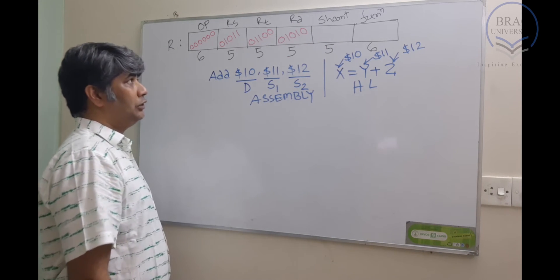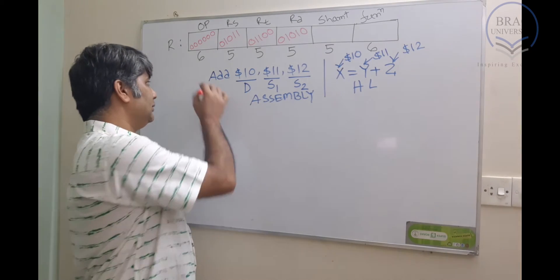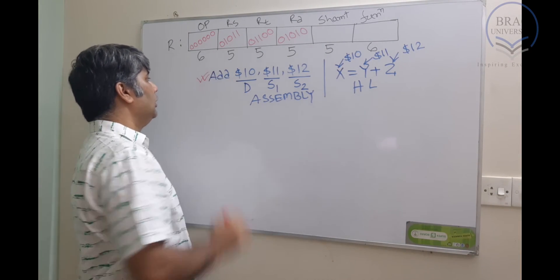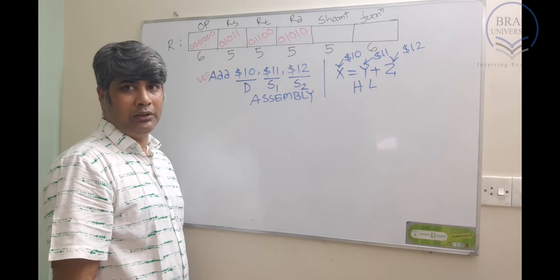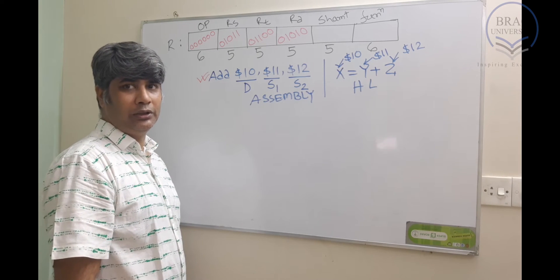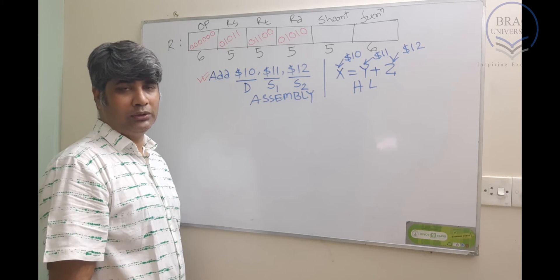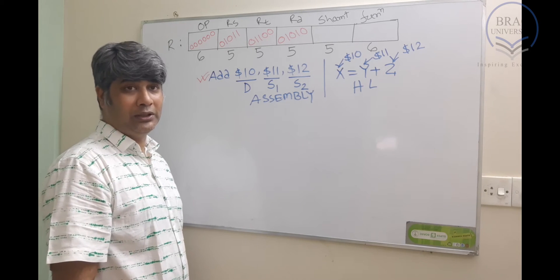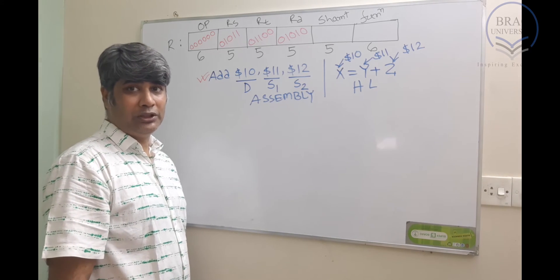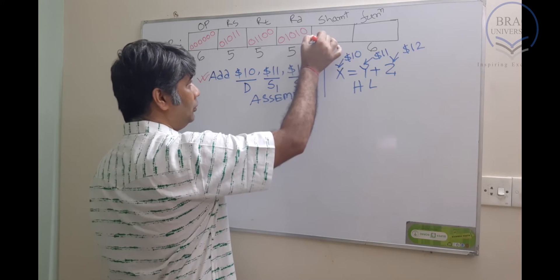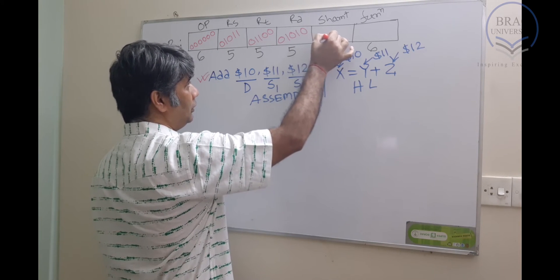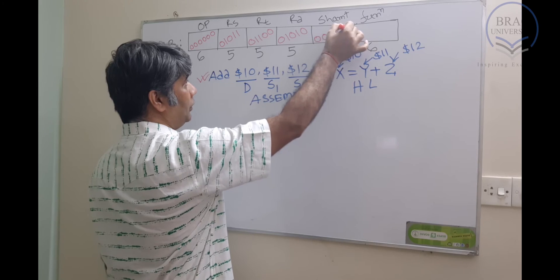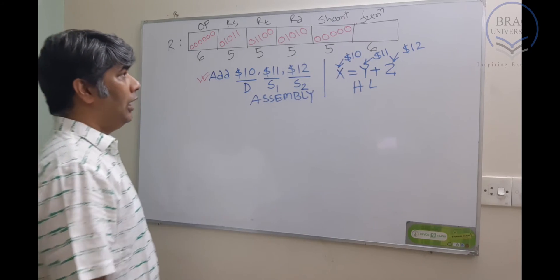Then it's the shift amount. In this instruction, did we do any kind of shifting? The answer is no. Since we did not do any kind of shifting, that means there is 0-bit shifting taking place, which means we'll put 0 here.